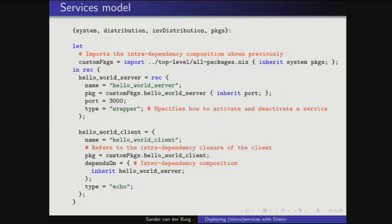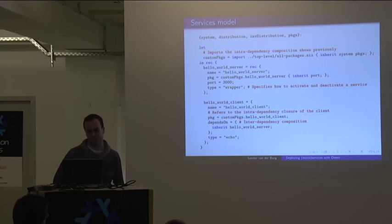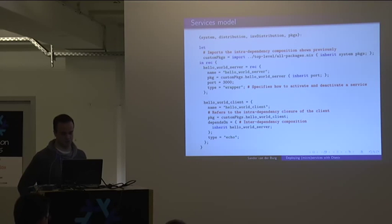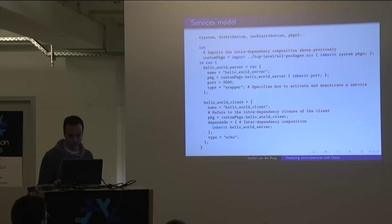The services model refers to the composition expression and provides extra information for each service — allowing it to find its interdependencies and be activated. For example, the Hello World server specifies it runs on port 3000. A type is also provided — the 'wrapper' type means the package includes a script explaining how to start and stop the service. The Hello World client's 'depends on' parameter composes the interdependency, so it knows which Hello World server to connect to.